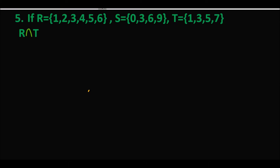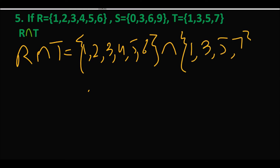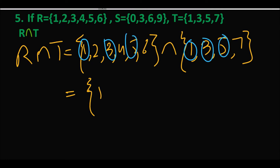Next question number 5 है जिसमें different parts हैं। एक part मैं करवाती हूँ, बाकी parts आपका homework है। इसमें R और T का intersection find out करना है। R = {1, 2, 3, 4, 5, 6} और T = {1, 3, 5, 7}. Intersection का मतलब है दोनों में जो common elements हैं वो लिखेंगे। Common elements हैं 1, 3 और 5. तो R intersection T = {1, 3, 5}.